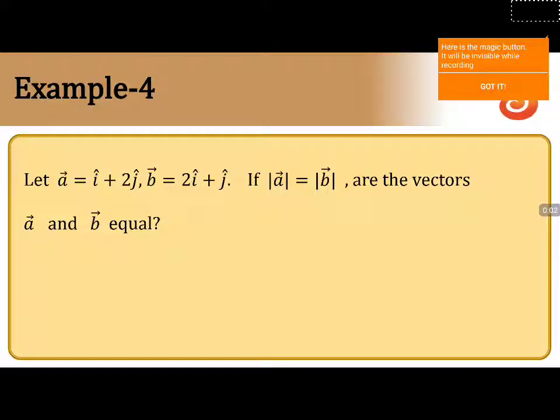They gave two vectors A and B. A vector is given by i-cap plus 2j-cap. B vector is given by 2i-cap plus j-cap.